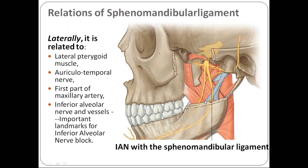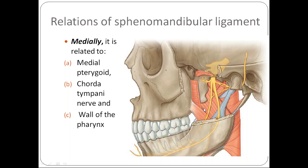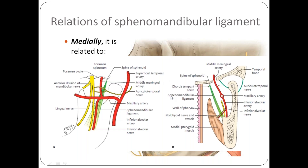The medial relations of the sphenomandibular ligament are the medial pterygoid muscle, the chorda tympani joining the lingual nerve, and the wall of the pharynx. The sphenomandibular and stylomandibular ligaments are commonly asked in practical examinations.